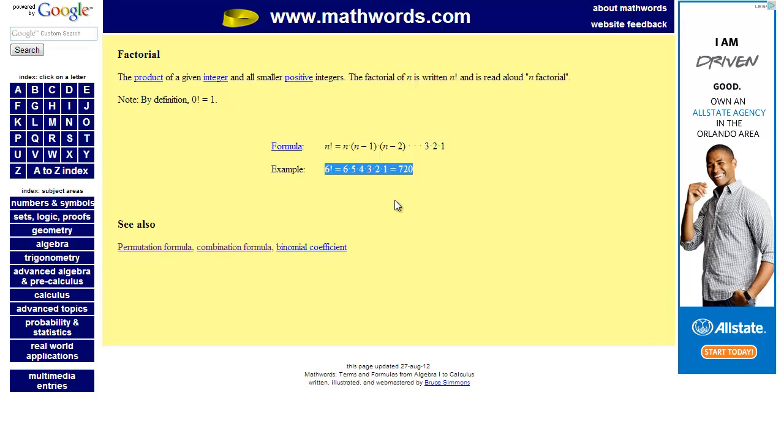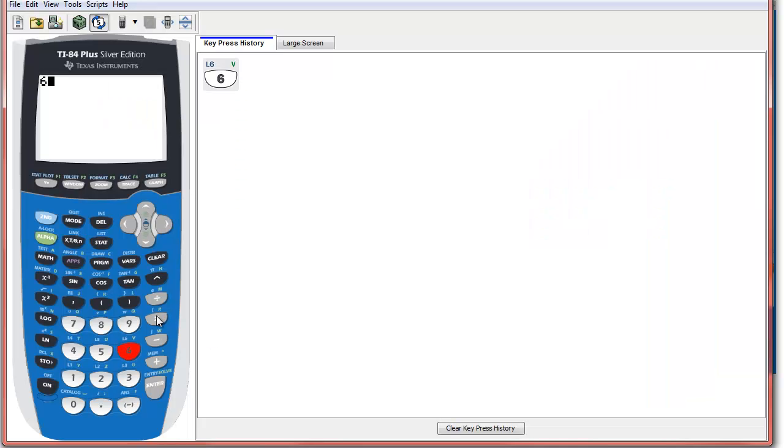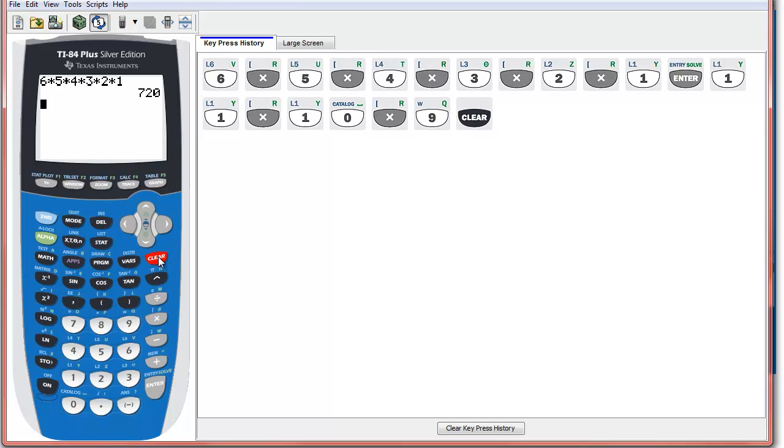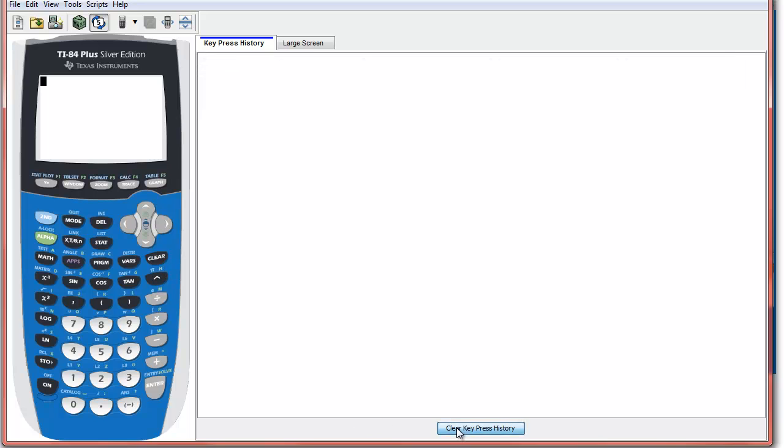Now this is nice, and when it's short like this you could type it into your calculator. You could type 6 times 5 times 4 times 3 times 2 times 1 into your calculator, but there's a couple of places where maybe you could fat finger it and get the wrong answer. Or if you had to do the 11th factorial, do you really want to go 11 times 10 times 9? I don't think so.